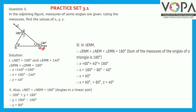Angles EMN and EMR form a linear pair, so their sum equals 180 degrees. Therefore, angle EMN plus angle EMR equals 180 degrees. Since angle EMR is 140 degrees, we get angle EMN, which is Z, equals 180 minus 140, therefore Z equals 40 degrees.